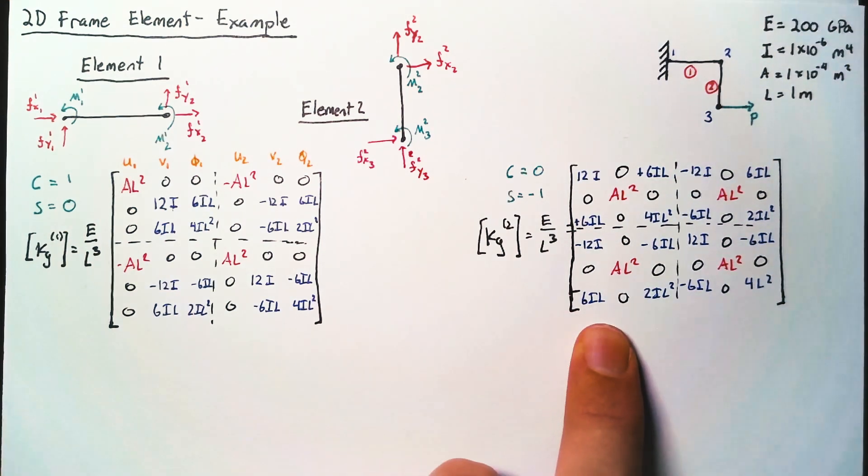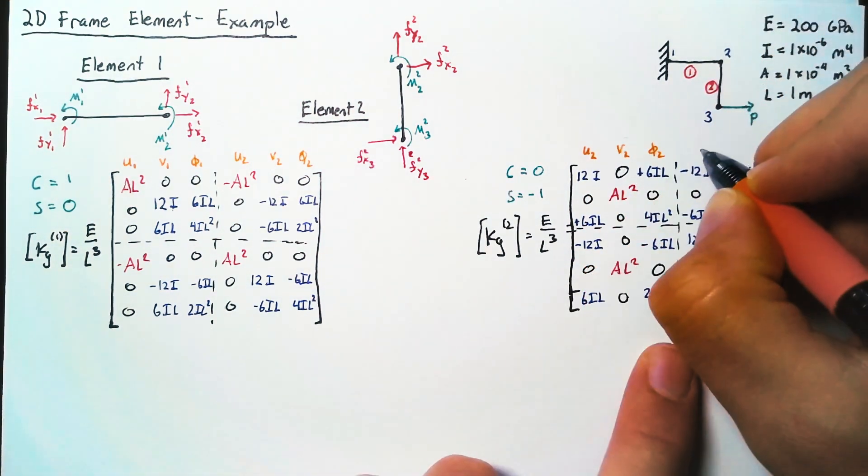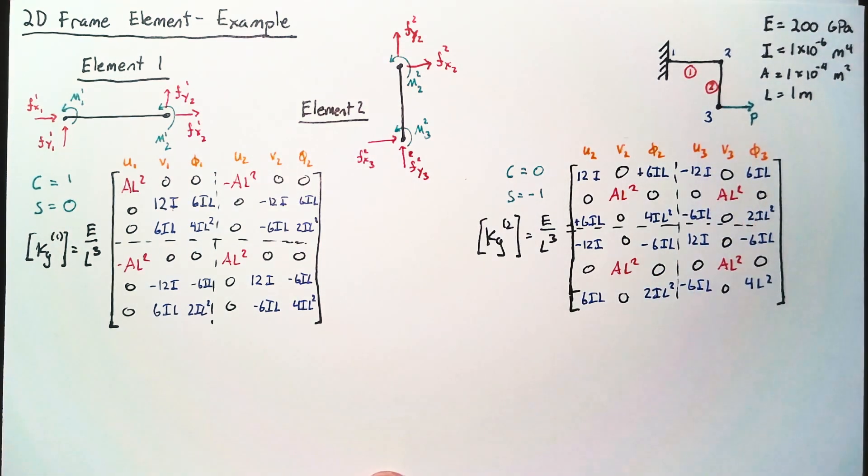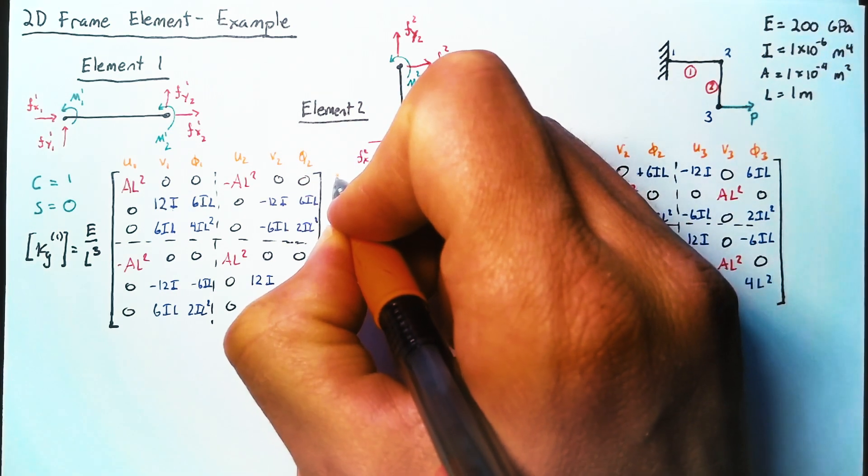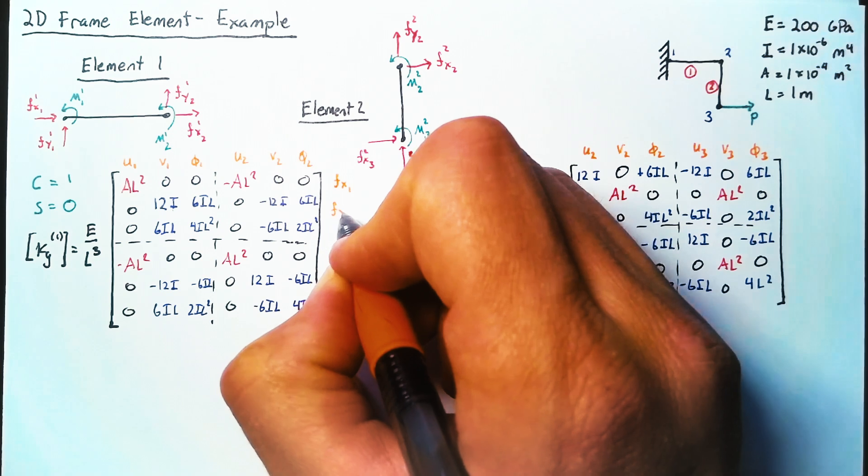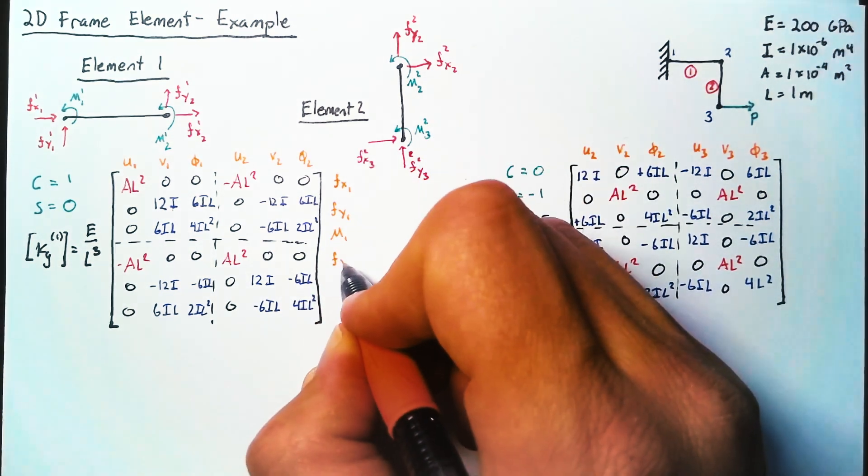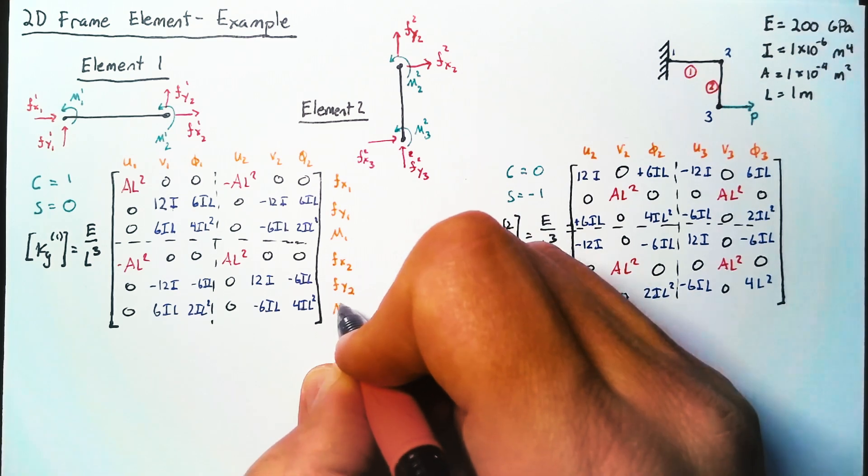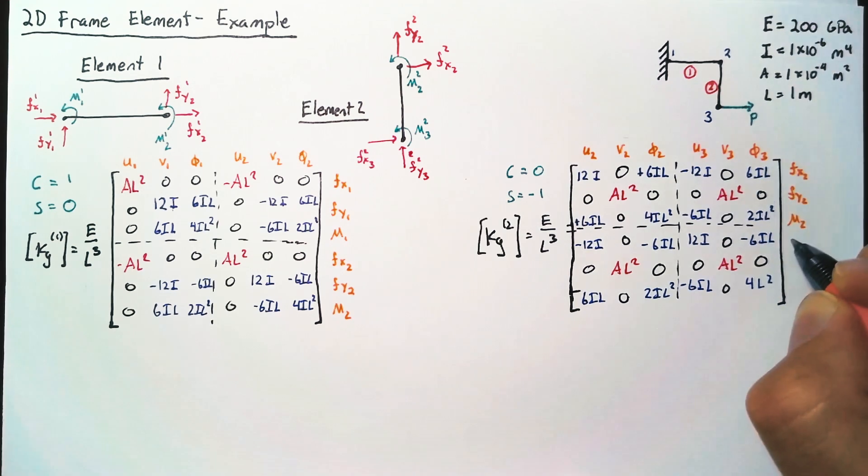And then for this other one, of course, the first set of three is for node 2, and the last set of three is for node 3. We can likewise separate out our rows. So the first row is going to be referring to the force in the x on node 1, the second force in the y on node 1, and the third the moment on node 1. And then the same for node 2 in the bottom 3. And then we're looking at nodes 2 and 3 for element 2.